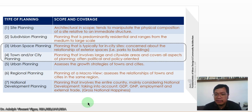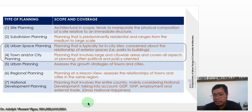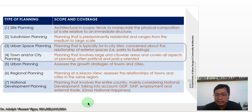We're going to discuss all seven types but focus on numbers three and four for this course. Site planning is architectural in scope — it tends to manipulate the physical composition of a site relative to an immediate structure. Subdivision planning is predominantly residential and ranges from the medium to large scale.